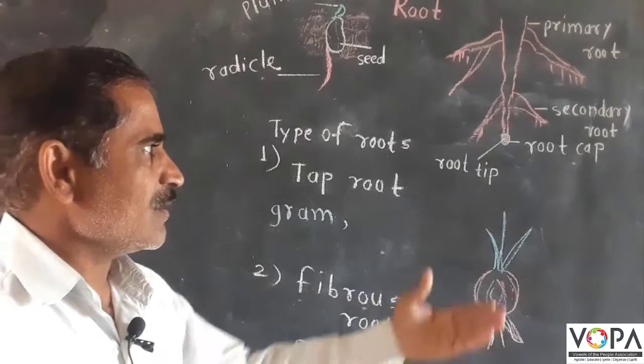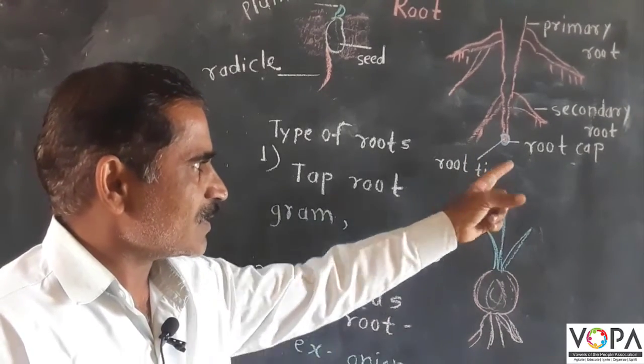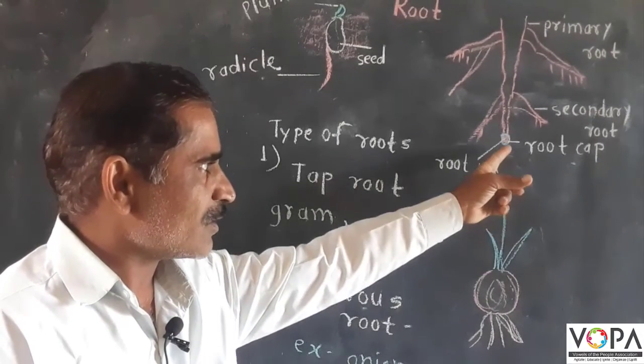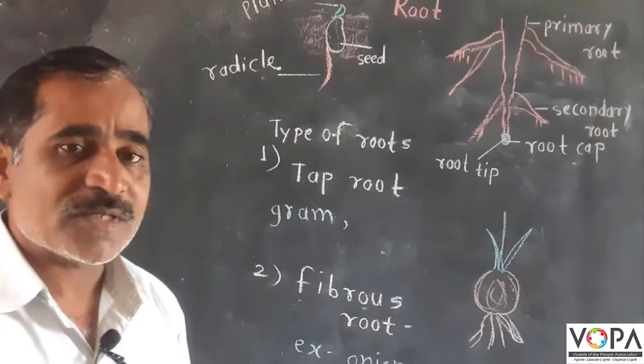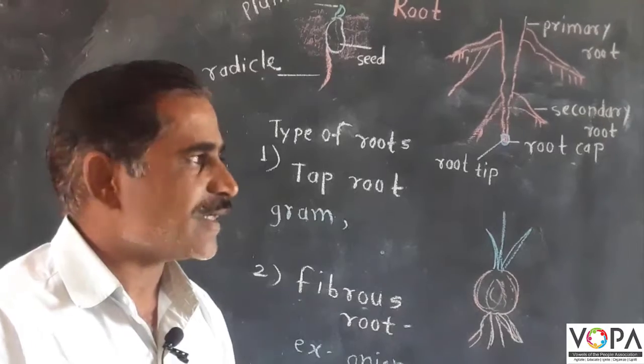There is a part that protects the root, which is the root cap. The function of the root cap is to protect the root tip because the root tip is delicate.